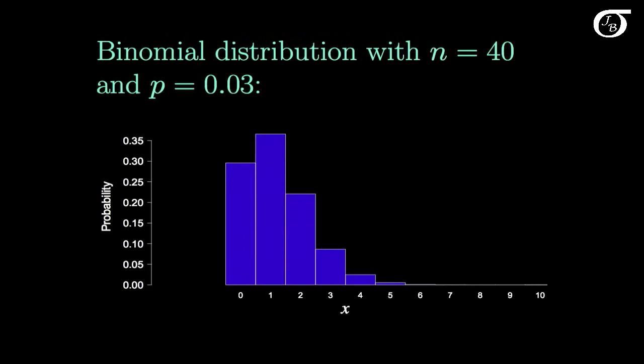What if we're closer to the boundary? Here P=0.03, which is close to the boundary of 0, and with the same value of n, we see a little bit of skewness, and if we superimpose a normal curve it does not fit very well. If we increased the sample size, the normal approximation would get better, but when we get near the boundaries of 0 or 1, we need a larger and larger value of n for the approximation to be reasonable.